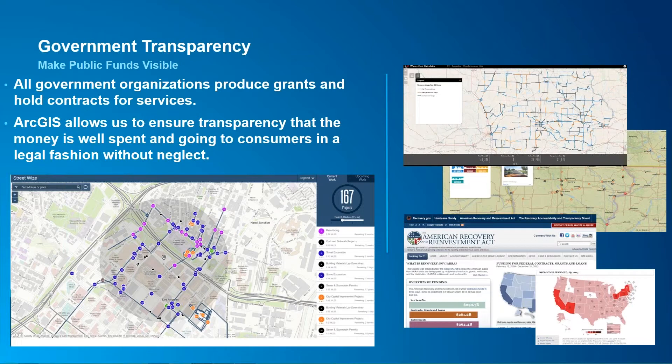That is a quick and easy way to understand how organizations are using GIS for government transparency. All government organizations at the state, federal, and local levels produce grants and hold contracts. GIS and public applications allow the organization to ensure transparency so constituents know where money is being spent — giving them accountability to report back if money is not being spent in an applicable manner.